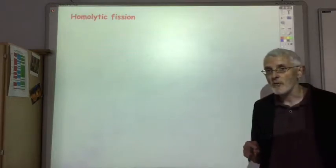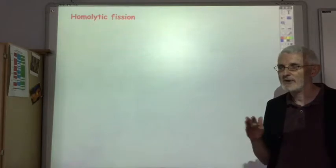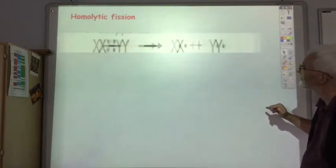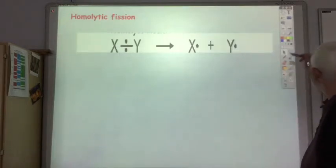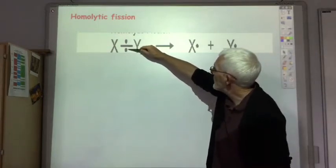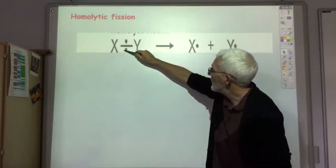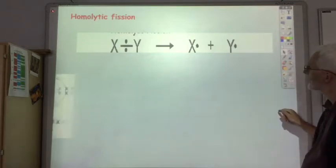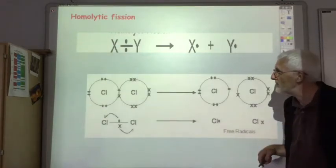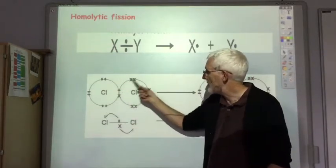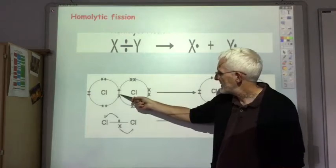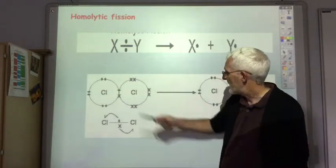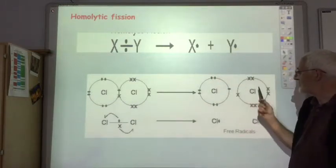Very occasionally you'll get homolytic fission and we came across this briefly in the Higher when we're talking about damage to the skin by UV radiation. So in this case when the bond broke one electron went to Y and one electron went to X, so it was just the exact reverse of the normal bond making process. So if we imagine it was a chlorine molecule, here's your normal chlorine molecule, here's the shared pair of electrons, and when it split up this electron went back to this chlorine atom and this electron went back to this chlorine atom, producing two normal chlorine atoms.